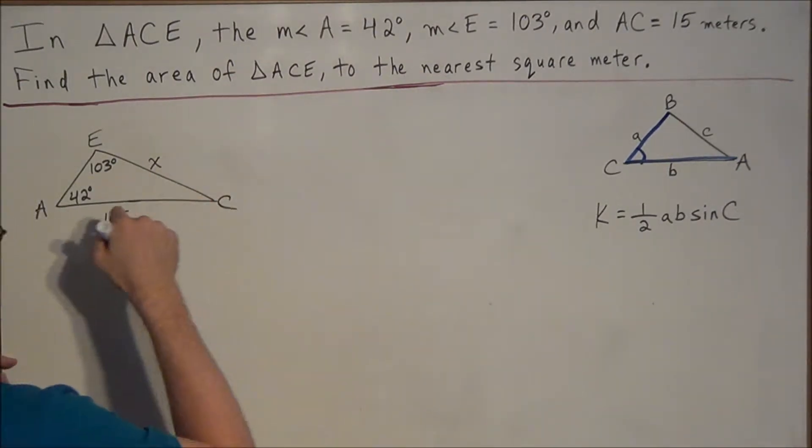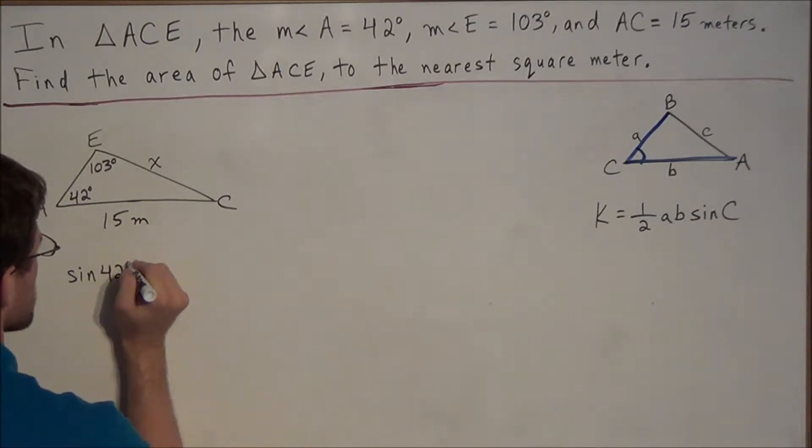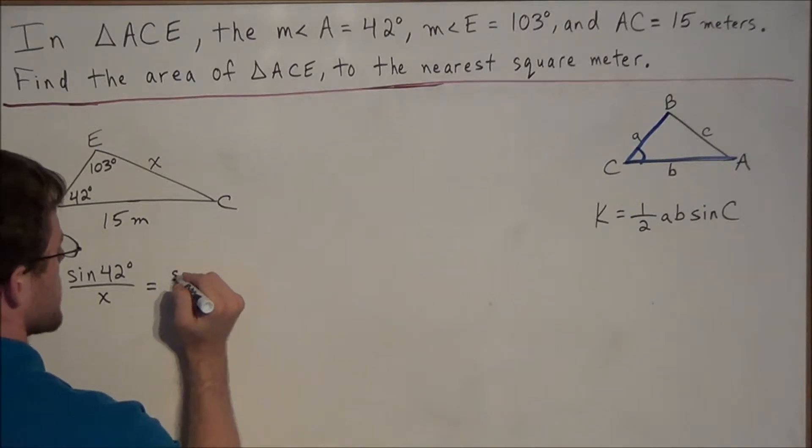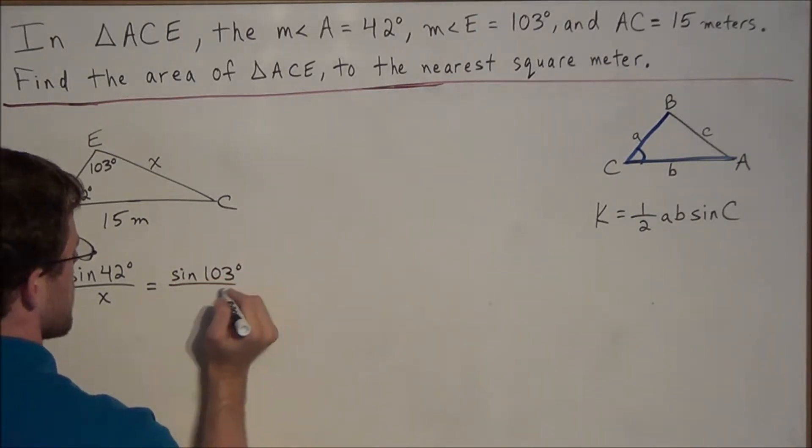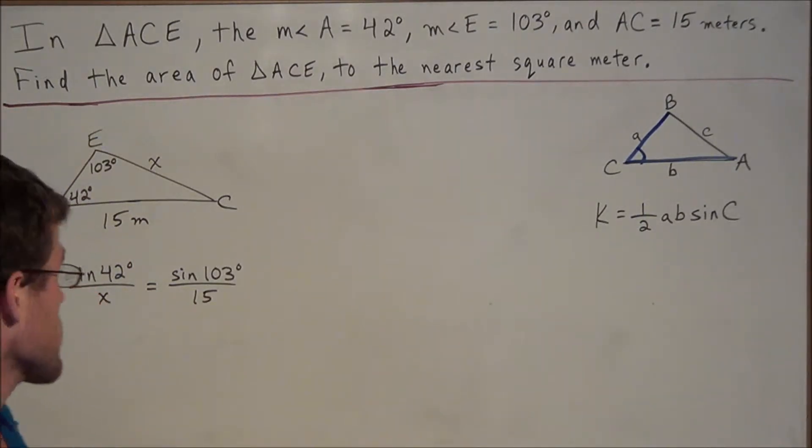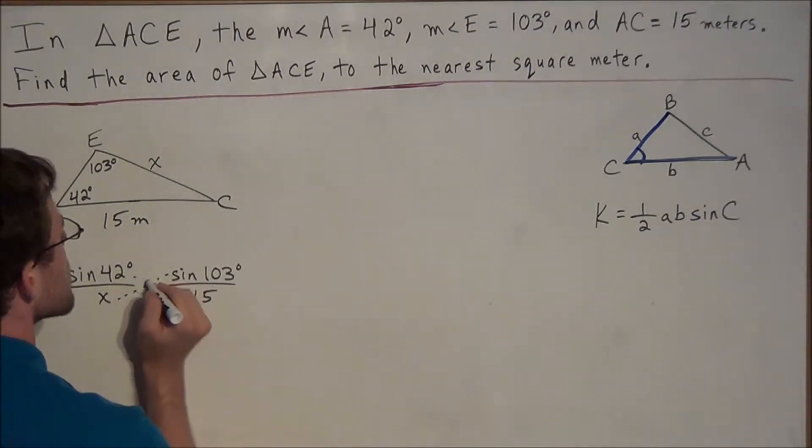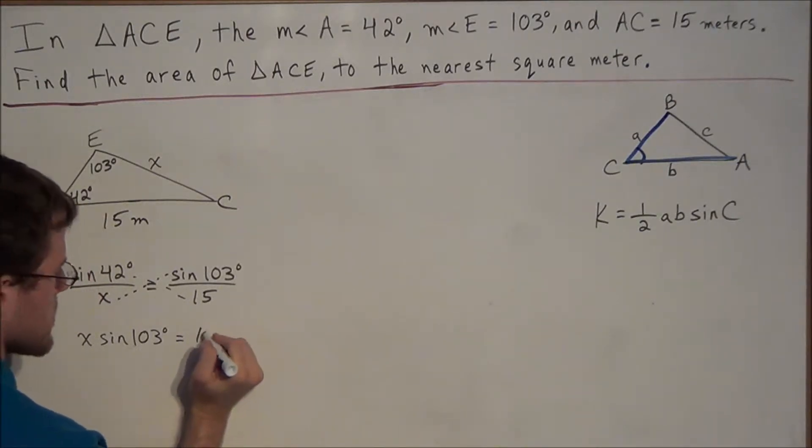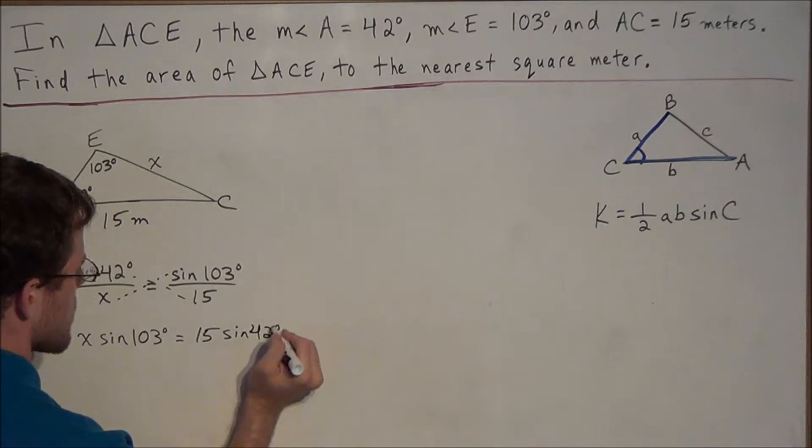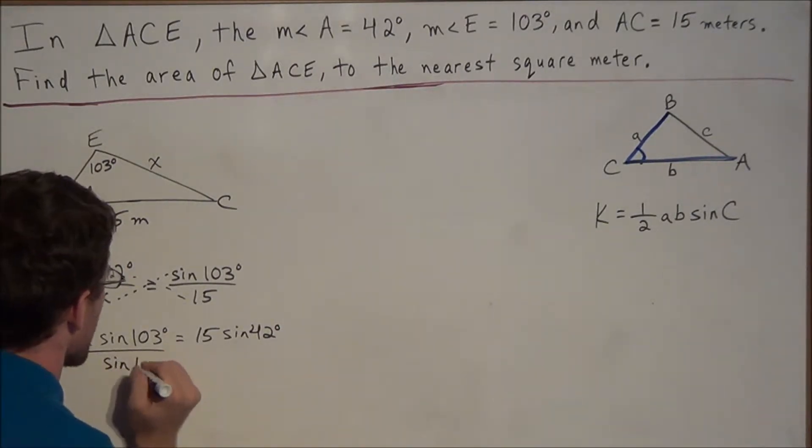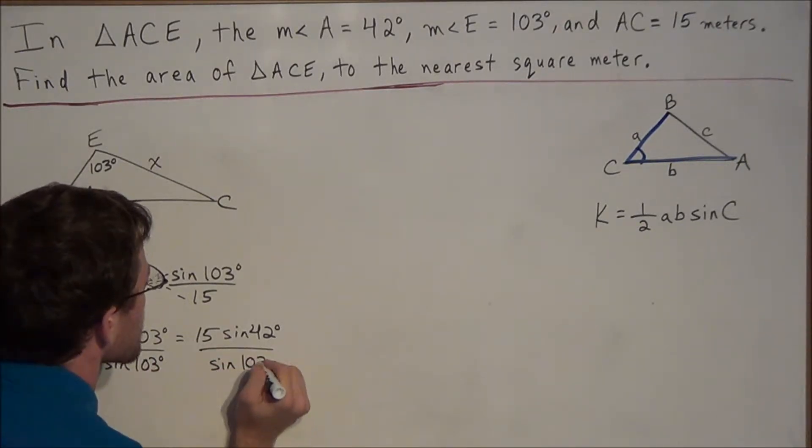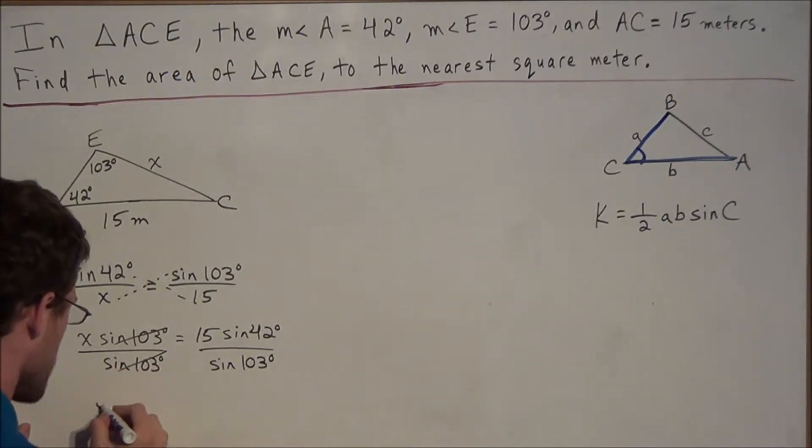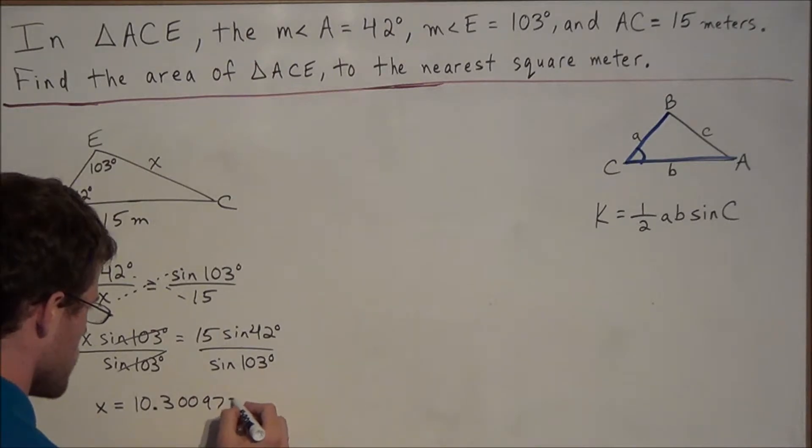So we're going to find the value of x. We're going to find the side opposite of angle A. So to use the law of sines, we could write sine of 42 degrees over x equals sine of 103 degrees over 15. We'll leave the units of measurement out for now, but we'll put them in at the end of the problem. So now to solve for x, all we need to do is cross-multiply. So we have x times sine of 103 degrees equals 15 times sine of 42 degrees. To solve for x, we just divide both sides by sine of 103 degrees.